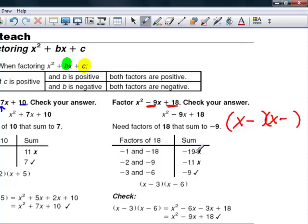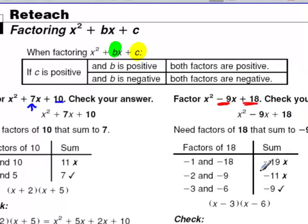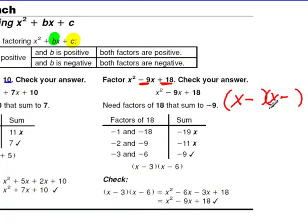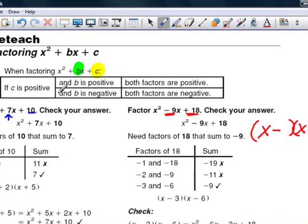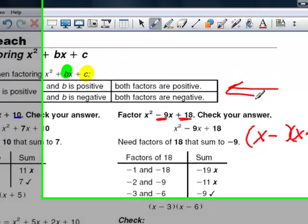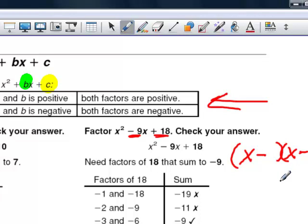Negative 1 and negative 18 add up to negative 19 — that doesn't work. Negative 2 and negative 9 multiply to give positive 18, but add to negative 11 — that doesn't work either. Negative 3 and negative 6 multiplied together give positive 18, and when added they give negative 9, so that's our winner. We plug in negative 3 and negative 6, giving (x − 3)(x − 6). We verify with FOIL and confirm we get x squared plus 9x plus 18.